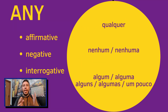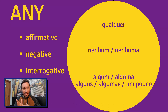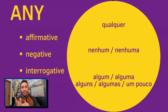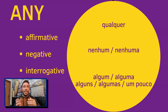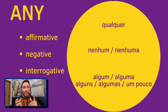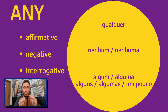In short, any will have three possible translations. Affirmative sentences: the meaning of any is qualquer. Negative sentences: the meaning of any is nenhum, nenhuma. Interrogative sentences: the meaning of any is algum, alguma, alguns, algumas, um pouco de.